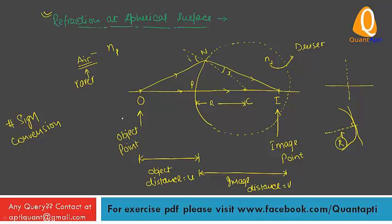Sign convention: if we talk about distance OP, then OP is always negative u, because the object is on the left side and we always use the Cartesian system for ray optics. PC is positive R, and PI is positive v.